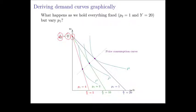So no matter what the price of good 1 is, if we're not changing the price of good 2, and we're not changing the income, that corner is going to stay put.